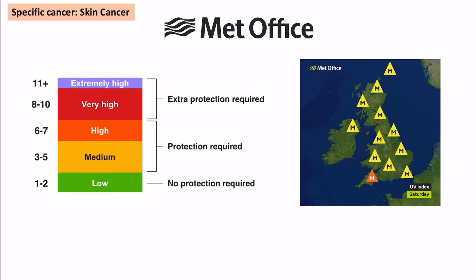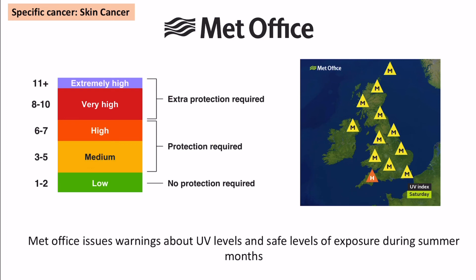Another indirect method is the Met Office issuing UV-level warnings during summer, advising on what is safe, often delivered through the news and weather. This aims to educate people so they take extra precautions when UV levels are very high. Like all indirect methods, these can be ignored by some people, but they at least represent an attempt to educate the population about the risks they face.